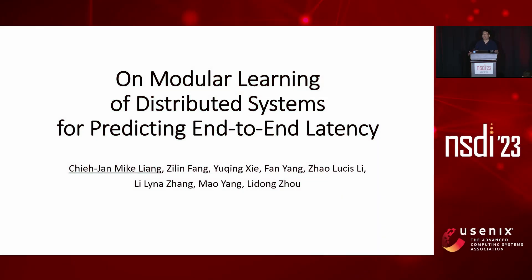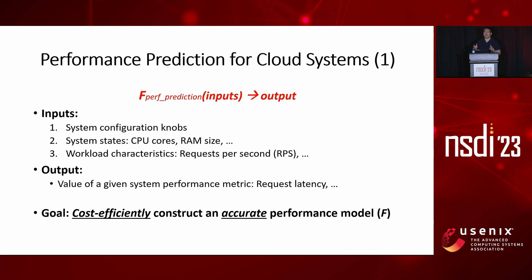It's great to be here to talk about our efforts on performance prediction for distributed cloud applications. The core concept behind performance prediction is actually quite simple. Imagine you have this magical function f, and you give it some input of some system states and some workload characteristics, and then it's going to try to predict what would be the likely system performance of some metric — one example being the end-to-end user request latency.